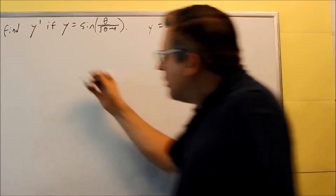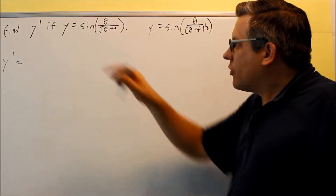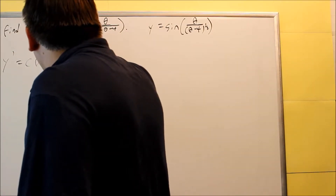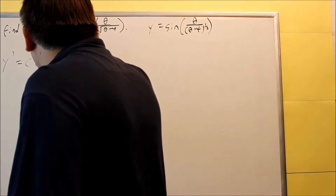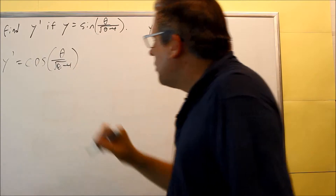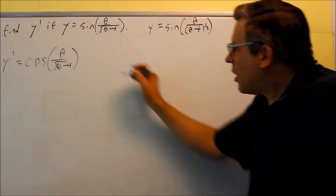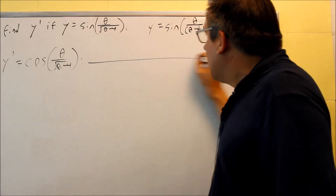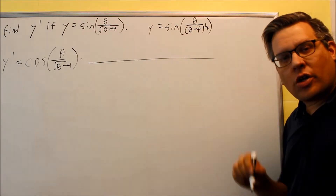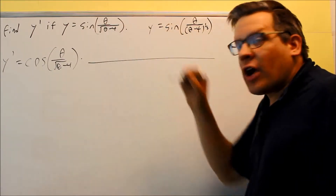Let's jump into it. For y-prime, we need to deal with the derivative of the outside first. The derivative of sine is going to be cosine, so I have cosine of theta over the square root — I'll keep that in square root notation. Then I'm going to multiply this by the derivative of the inside, which requires us to do a quotient rule because we have a fraction.